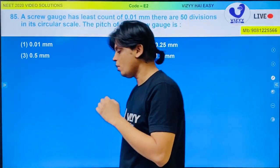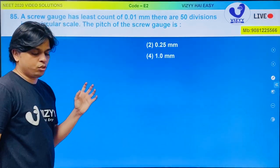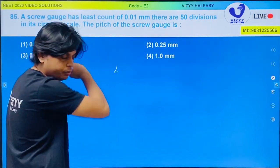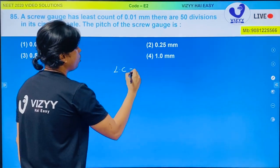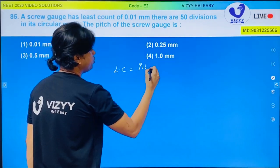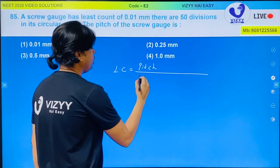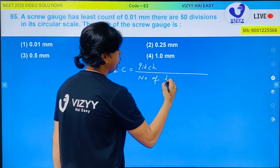So as you know that least count is defined as, in micrometer screw gauge, is defined as pitch upon total number of divisions on circular scale.